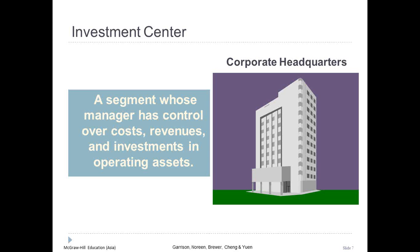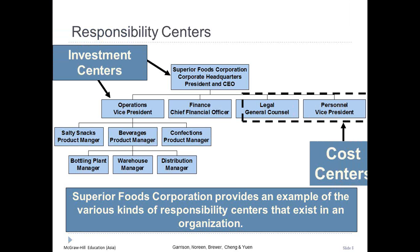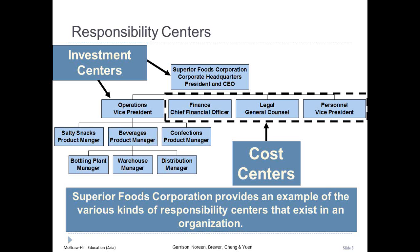Superior Foods Corporation provides an example of the various kinds of responsibility centers in an organization. The president and CEO, as well as the vice president of operations, manage investment centers. The CFO, general counsel, and vice president of personnel all manage cost centers. Each of the three product managers reporting to the vice president of operations — salty snacks, beverages, and confections — manage profit centers. The bottling plant manager, warehouse manager, and distribution manager all manage cost centers that report to the beverages product manager.